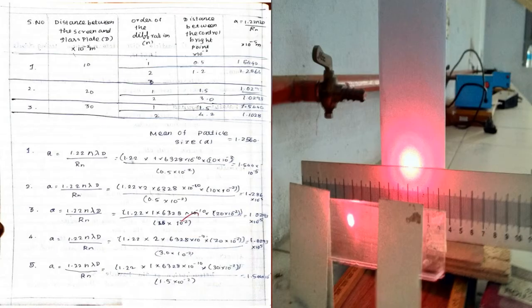You get the final answer is 1.504 × 10^-5 meters. Next, the second diffraction R_n is 1.2. This value substituting into the particle size formula, you get the answer 1.2866 × 10^-5 meters. Similarly you calculate 20 centimeters and 30 centimeters values. You get mean of particle size, average a equals 1.2560 × 10^-5 meters. So that is the particle size of lycopodium powder.